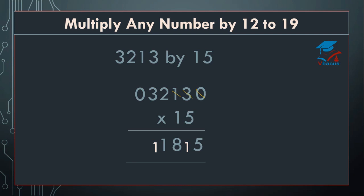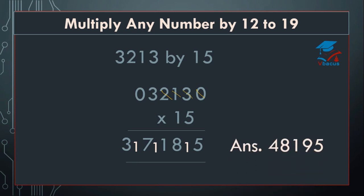5 threes are 15 plus 2 equals 17. Write 7, 1 will be carried over. Cut 2. 5 zeros are 0 plus 3 equals 3. So this 1 will be added to 3, this 1 will be added to 7, and this 1 will be added to 8. So your answer will become 4, 8, 1, 9, 5. This is your final answer.